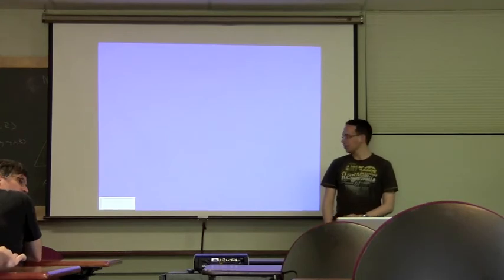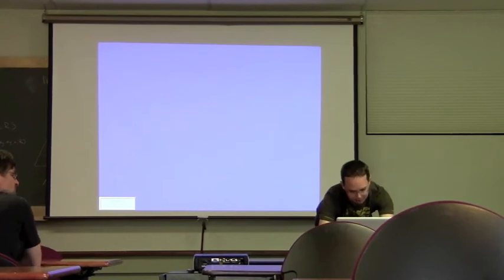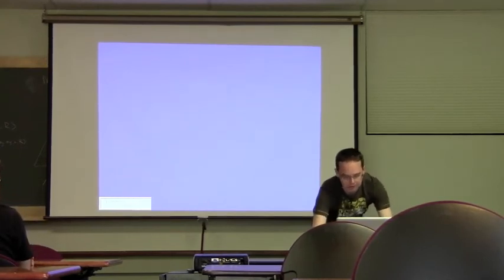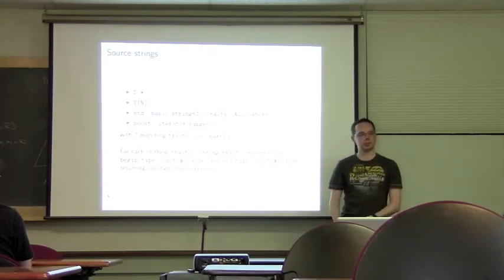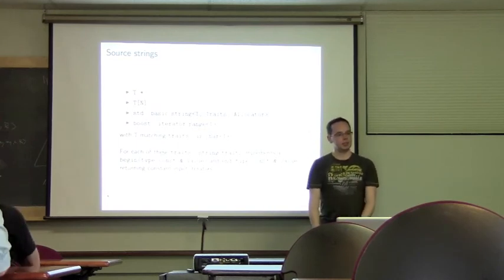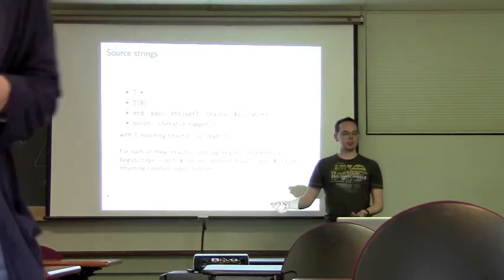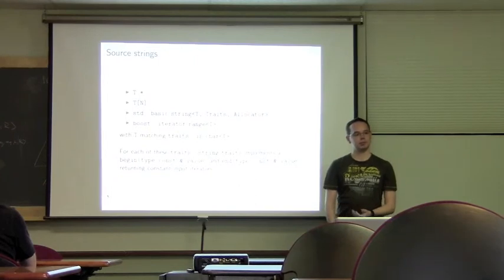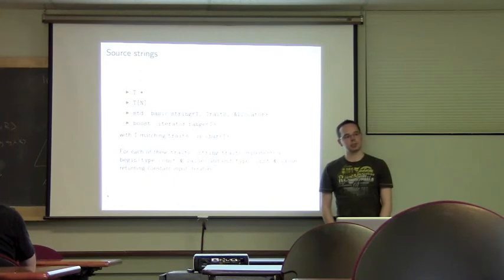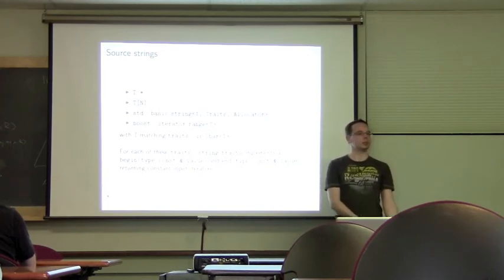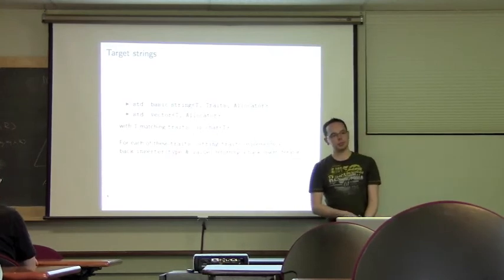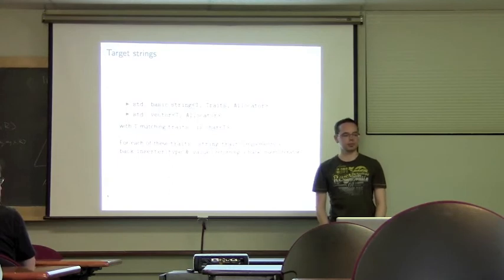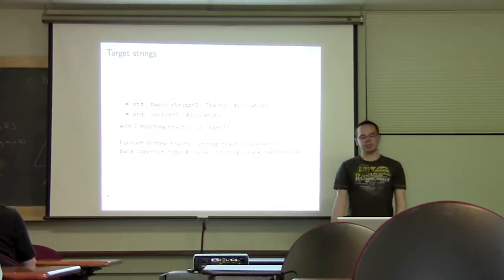What kinds of strings do you support? For input strings: standard char pointers, basic_string, a char array (null-terminated or not), basic_string with iterator range. You can specialize the string traits for custom string types — for example if you want to use a Qt string, you can specialize these traits and it should work just fine. For target strings, it's basically those returning a back-insert iterator — by default basic_string and vector are implemented, though you could also add a list of characters, though that doesn't make much sense as a string.